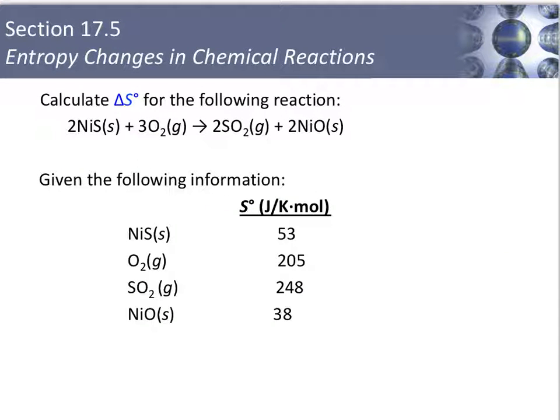So now let's calculate a standard entropy change for a reaction given the entropies for the different reactants and products shown here. By the way, these standard entropies have been calculated based on the idea that at 0 Kelvin, the entropy of a perfect crystal is 0, and most will be positive. So now we'll do our calculation.